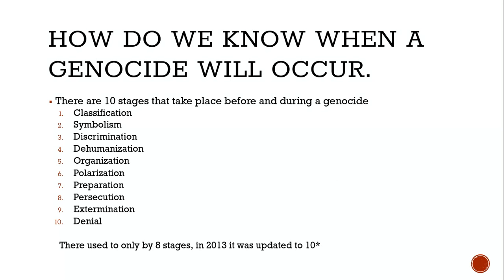Before we get into this, let's talk a little bit more about some context. The term genocide didn't even exist before 1944. It comes from a combination of the Greek word genos with the Latin word sidio. Genos means family, tribe, or race, and sidio means to massacre.